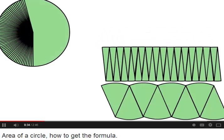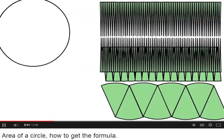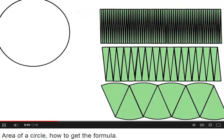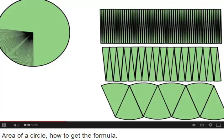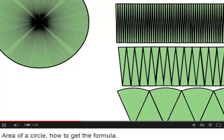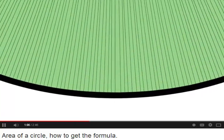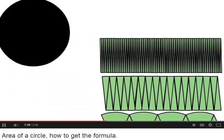If we continue this process of dividing the circle into even smaller equal pieces, we will get closer and closer to a rectangle, which is what we want. But how far do we have to go? We have to continue to divide the circle into small equal pieces into infinitely many small equal pieces.